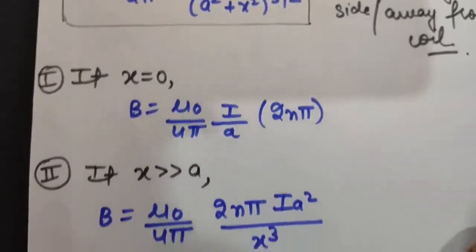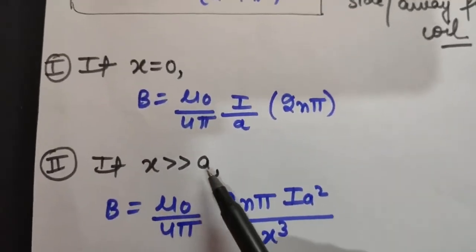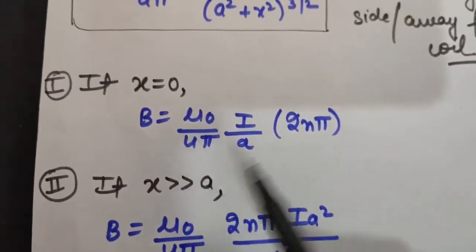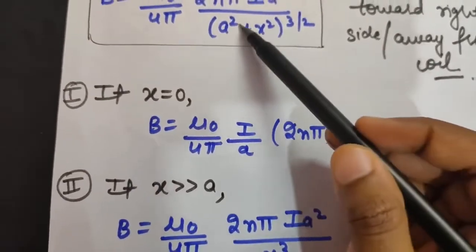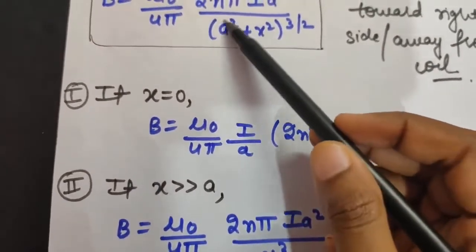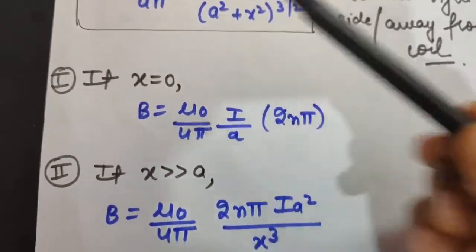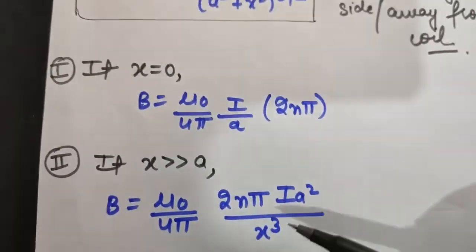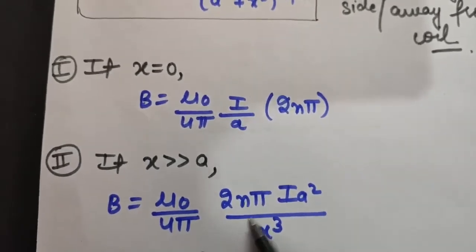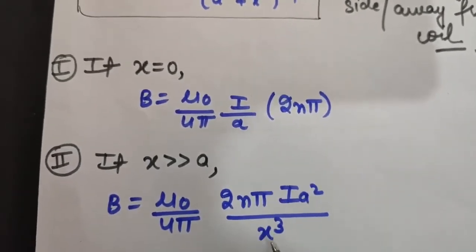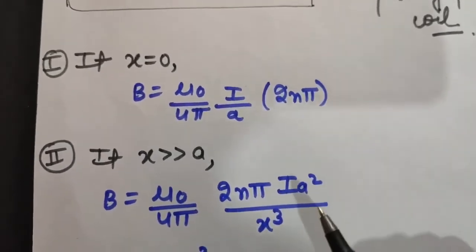The second case: if x is very much greater than A, we can neglect A² and get B = (μ₀/4π) × (2NπIA²) / x³.